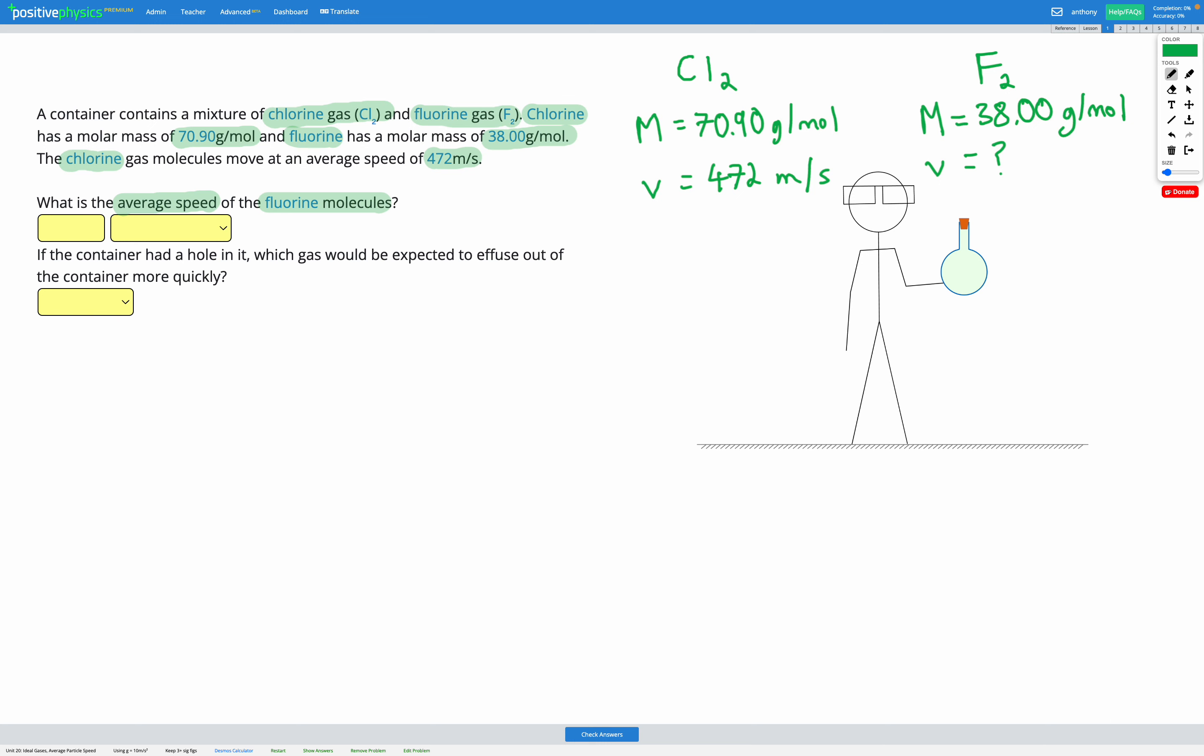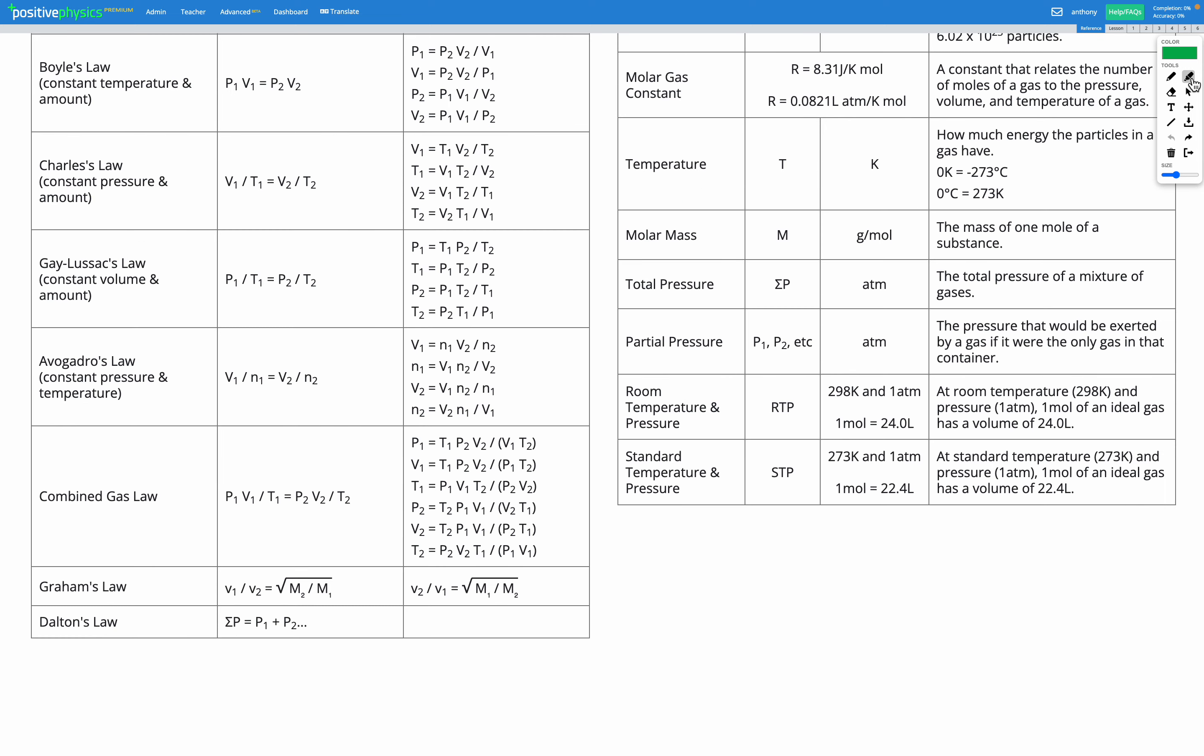So those are our known and unknown variables. Now let's head to the reference sheet and look for an equation that might be able to help us. Here we have Graham's Law, which relates the speeds and molar masses of our two compounds.